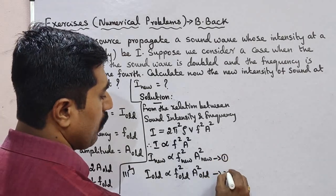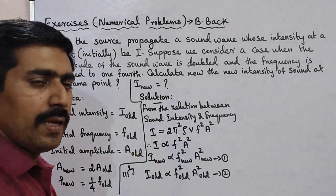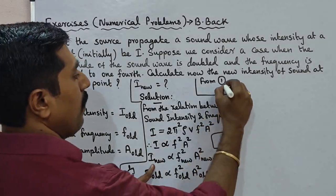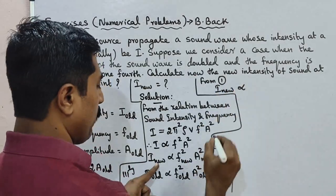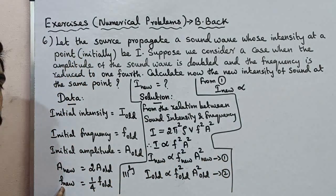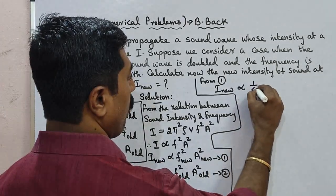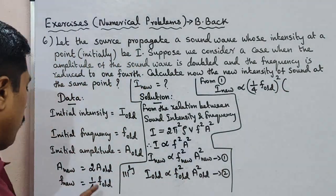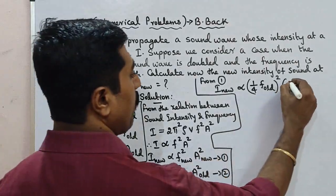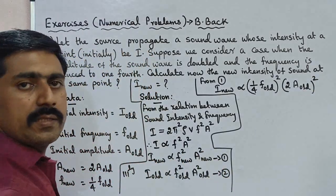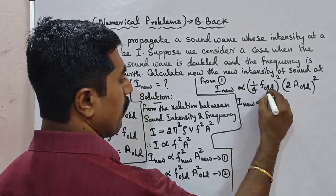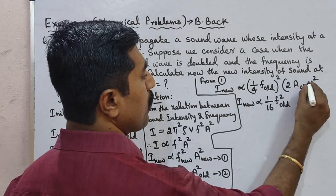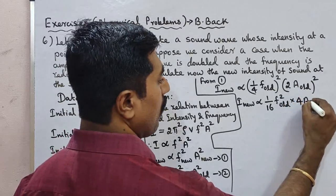We need the new intensity I new. Using the proportionality relation, substituting: F new equals one-fourth F old, and A new equals 2A old. So I new is proportional to (one-fourth F old)² times (2A old)², which gives one-sixteenth F old squared times 4 A old squared.